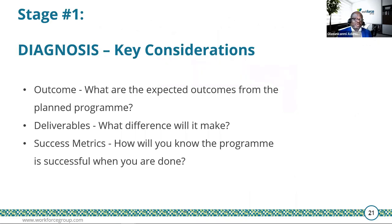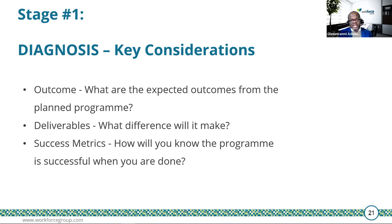Once that is clear, you have to define: what are the expected outcomes for the planned program? You should also be clear on the deliverables — when you run this program, what difference is it going to make in your business? And finally, you must define the success criteria: in delivering the program, how would you really know it is successful? Those measures must be defined right from the beginning.